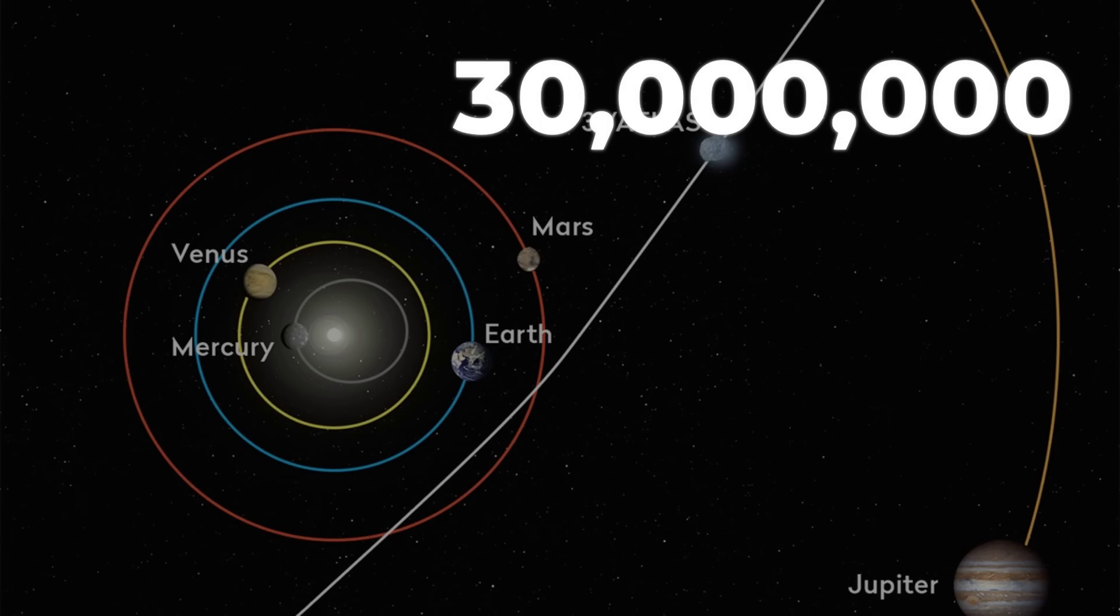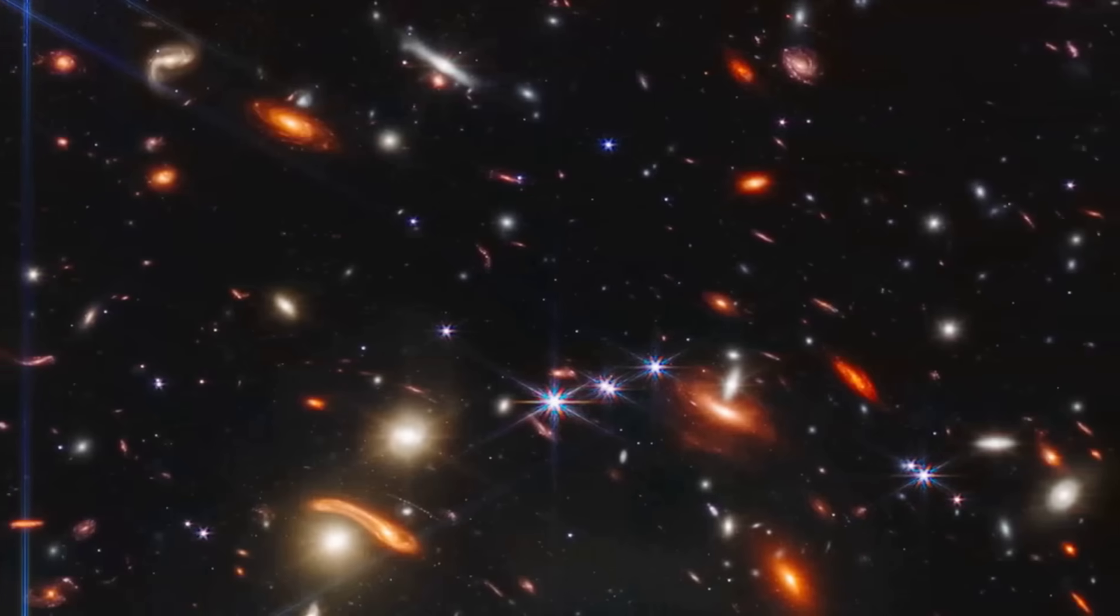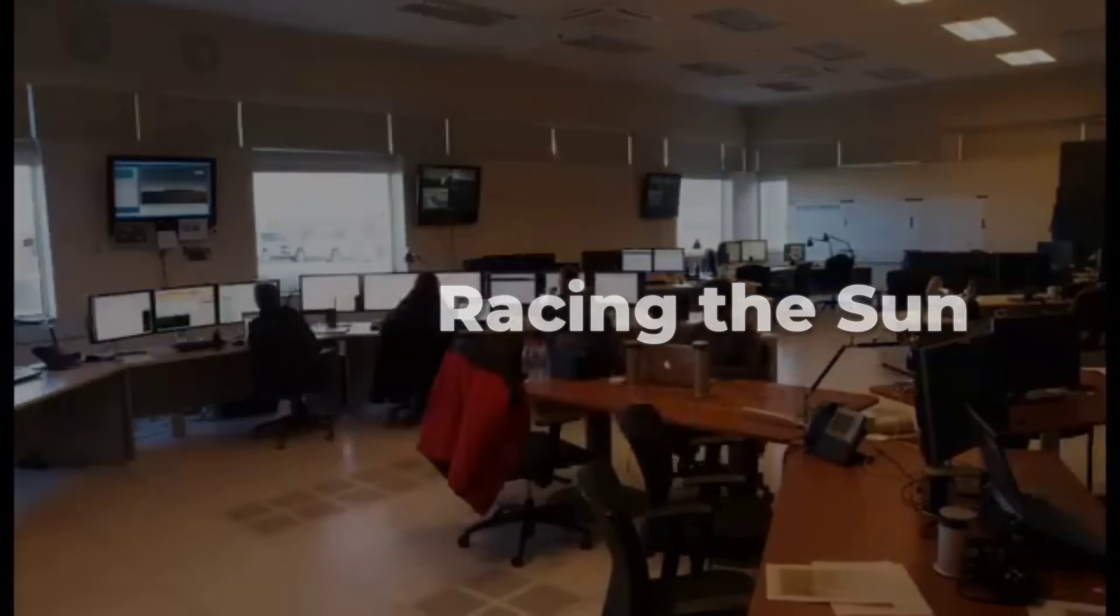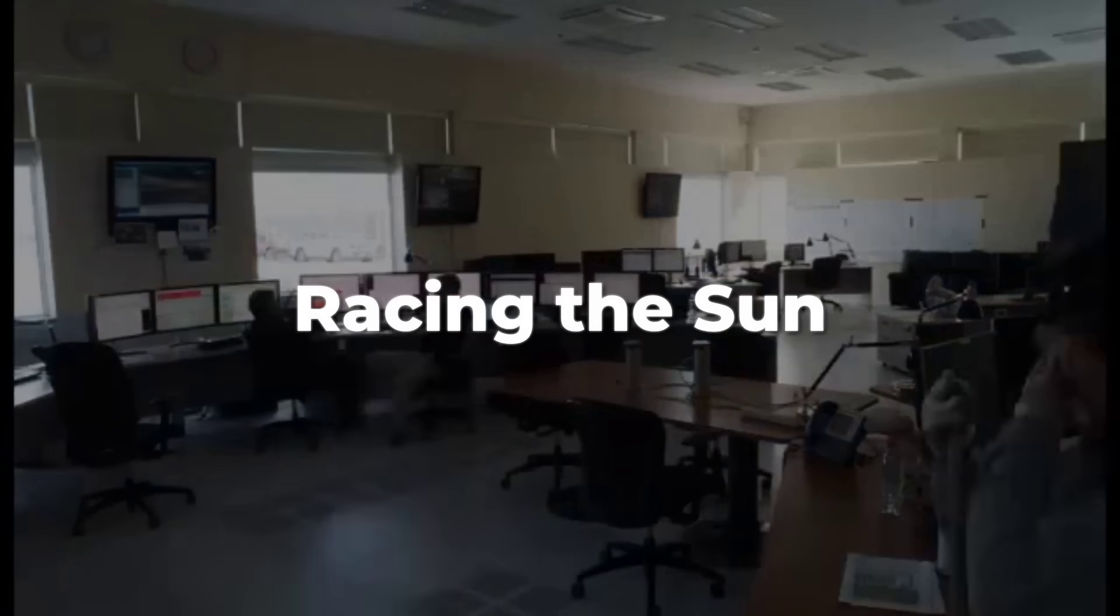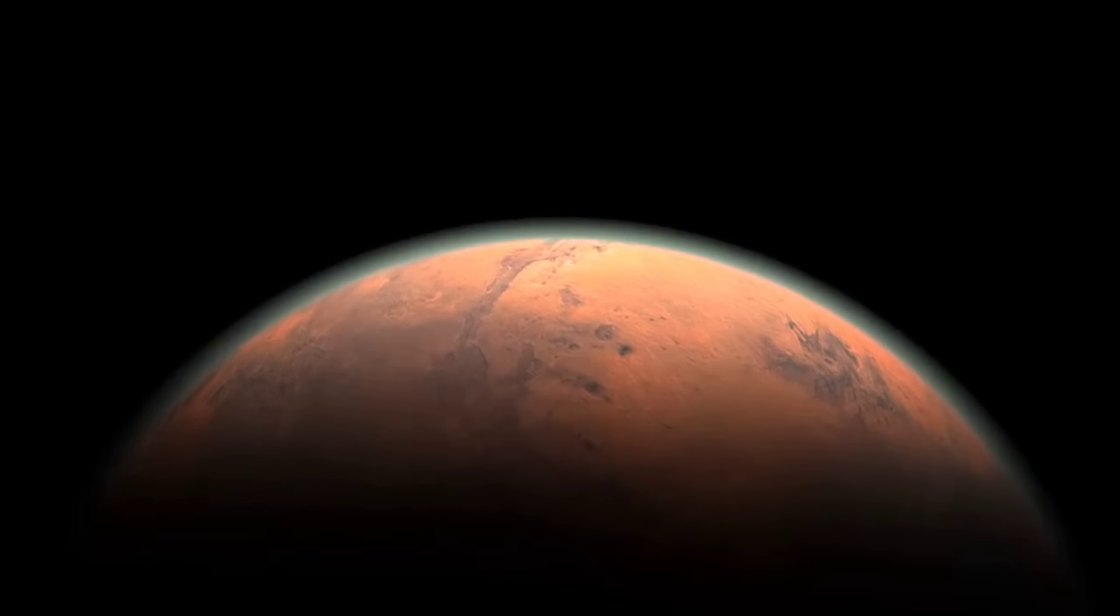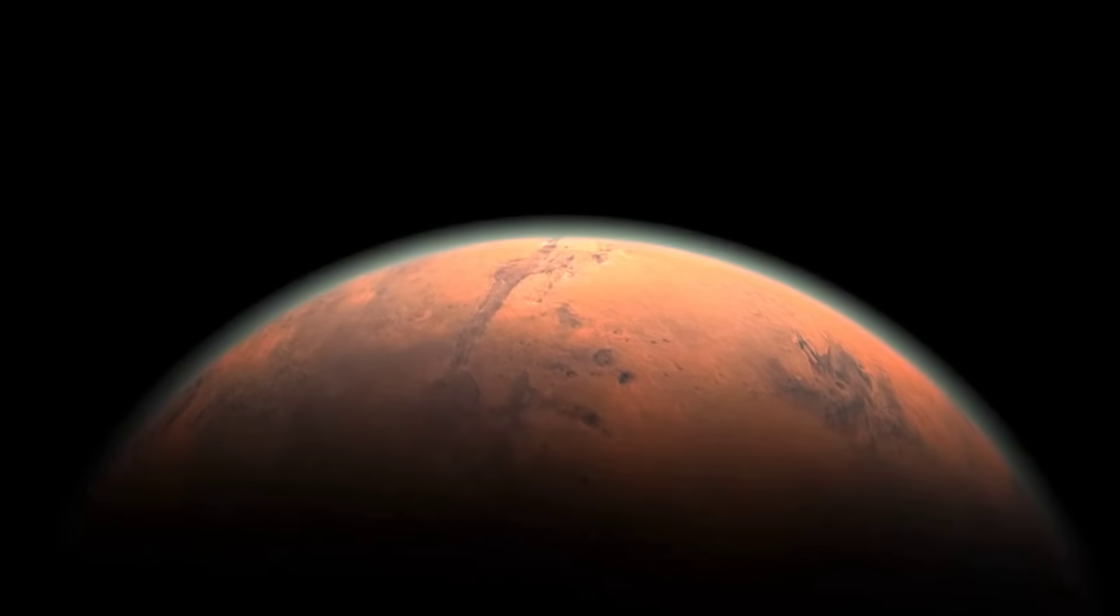This is the last chance for Earth-based eyes to catch the interstellar wanderer before it disappears into solar conjunction. And with its outbound leg taking it past Mars' orbit, just 30 million kilometers from the red planet, some of our best instruments may soon have to watch from a whole new vantage point. For now, astronomers are racing the sun, hoping to capture every clue before the curtain falls.